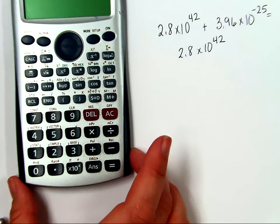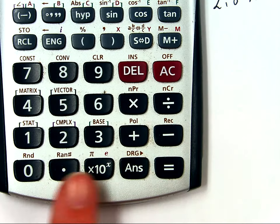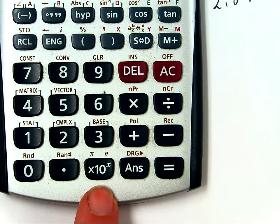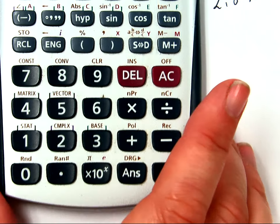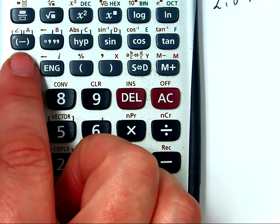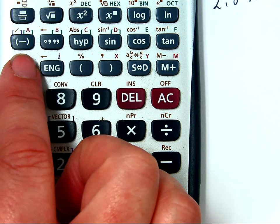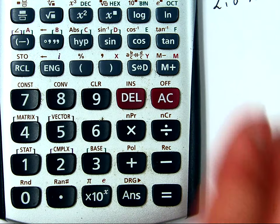Let me go ahead and scroll in. On this Casio, their exponent button is times 10 to the X. Also, up here is my negative key. So the key that you use to make your numbers negative or positive is in a different place as well.